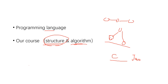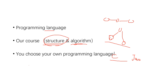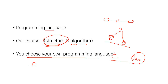Some of you may know Java, some may have learned Python or C++ on your own. For the experiment part, I'm not going to make everyone use the same programming language — you can choose your own. If you just learned C, choose C. If you're interested in Java, Python, or another language, that's fine. The key point is that no matter what language you use, you'll be solving the same problems about structure and algorithm.